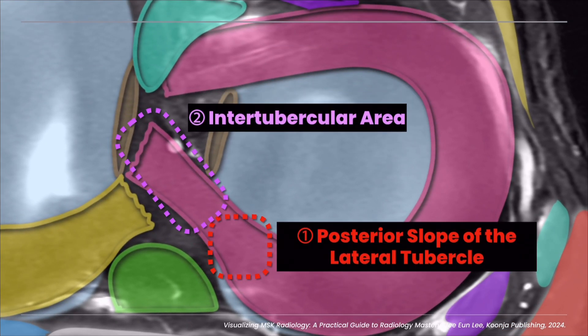The first attachment is on the posterior slope of the lateral tibial tubercle, which corresponds to the minor component of the lateral meniscus posterior root. The second is at the medial tibial tubercle, along the intertubercular crest, just posteromedial to the anterior cruciate ligament tibial insertion and anterior to the posterior cruciate ligament. This is the major component, and it extends all the way to the posterior aspect of the ACL tibial attachment.